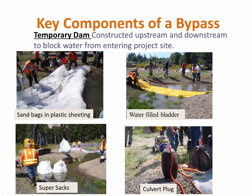When finished using a water filled bladder, considerations need to be made for where the water is released to prevent discharge of contaminated or high temperature water. Super sacks are typically installed with a crane or excavator and should be filled with rounded gravel in case of spillage. Culvert plugs fill with air and only work with round culverts, but can be a quick way to block water at a culvert site. Construction of the cofferdam should be done in stages to allow a gradual down-ramping of flow so that fish can be relocated safely.